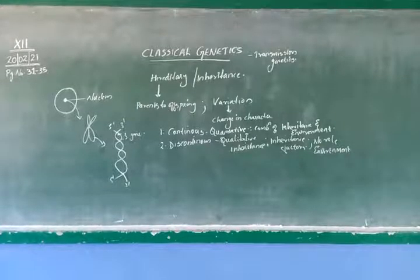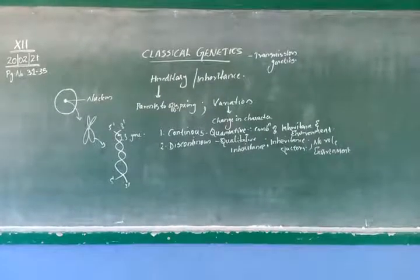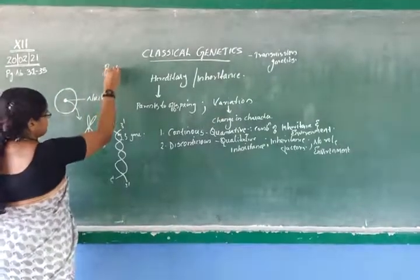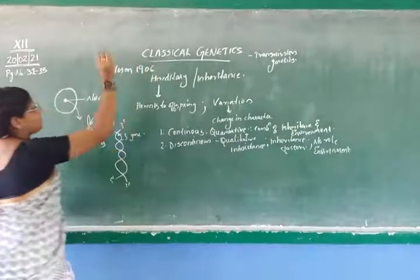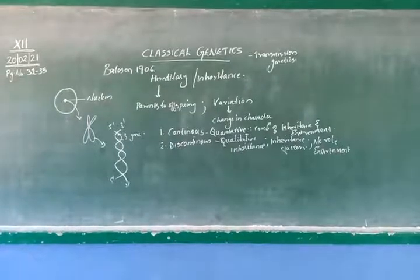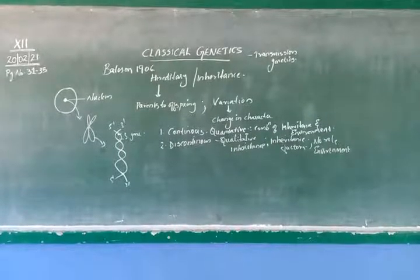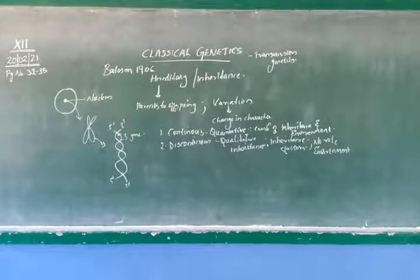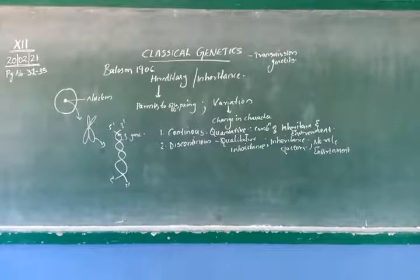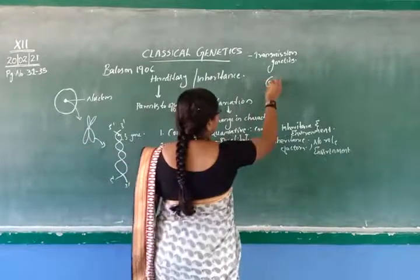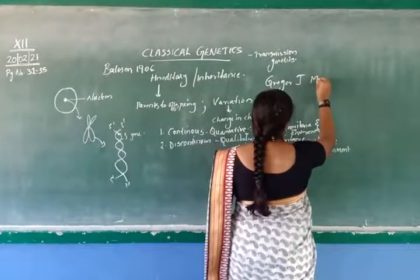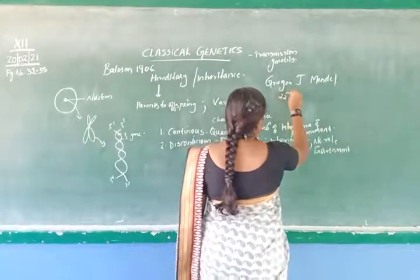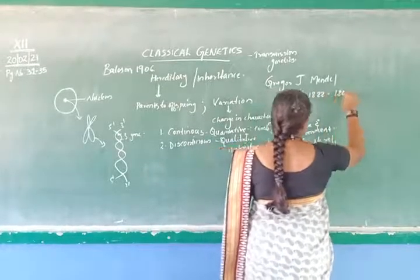The word 'genetics' was coined by Bateson in 1906. But in the 1880s, work related to genetics — the inheritance of characters — had already started. The father of genetics is Gregor Johann Mendel. He was born on 22nd July 1822 and died in 1866. He conducted his experiments on the plant Pisum sativum, the garden pea.